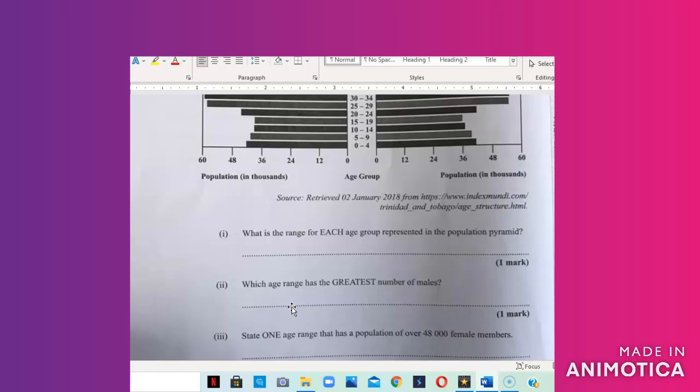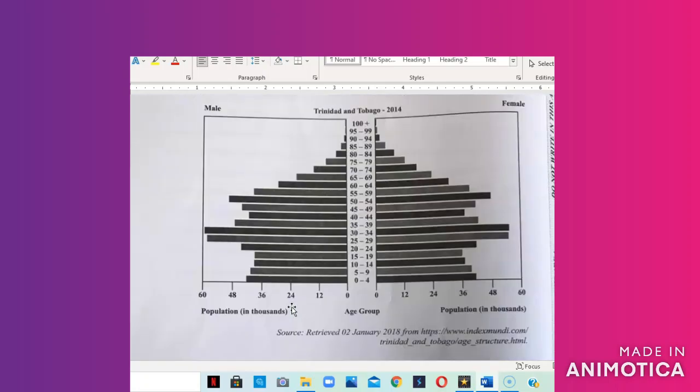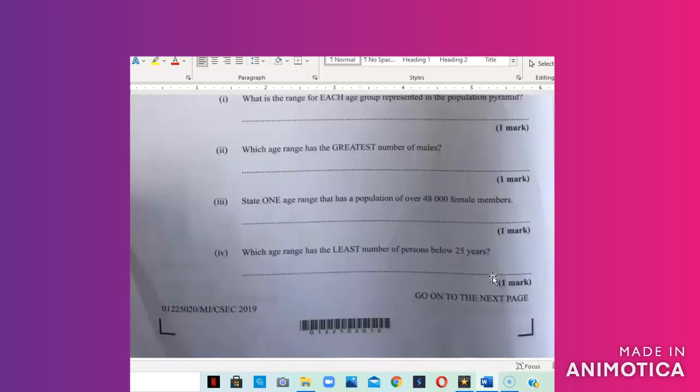Part three asks us to state one age range that has a population of over 48,000 female members. So females over 48,000. 48,000 is here, you just go up. So 48,000, so these two would be over 48,000. Once you list any one you should get your mark. So that's 25 to 29 and 30 to 34. Anyone you list, you should get your marks.